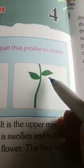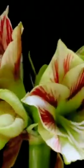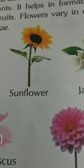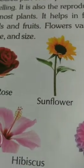Secondly, leaves also help in reproduction. The flower is the most beautiful, brightly colored part of the plant. It can be sweet smelling. It is also the reproductive organ in most plants. It helps in the formation of seeds and fruits. Flowers vary in color, shape, and size — like rose, sunflower, jasmine, dahlia, hibiscus, and many more flowers that occur in nature with different shapes and sizes.